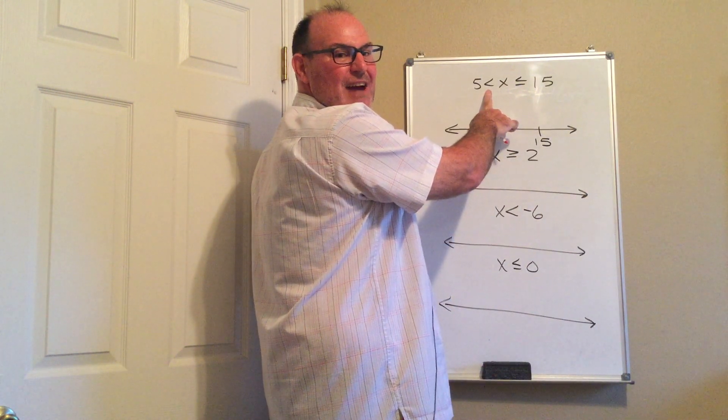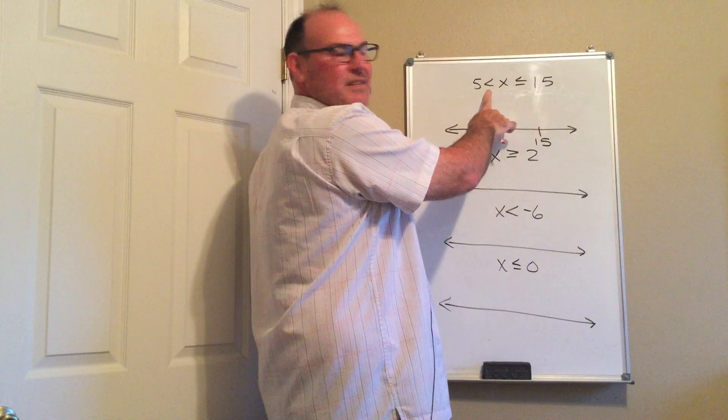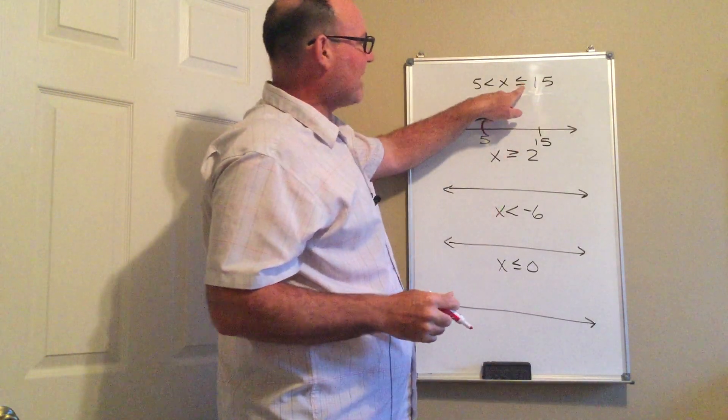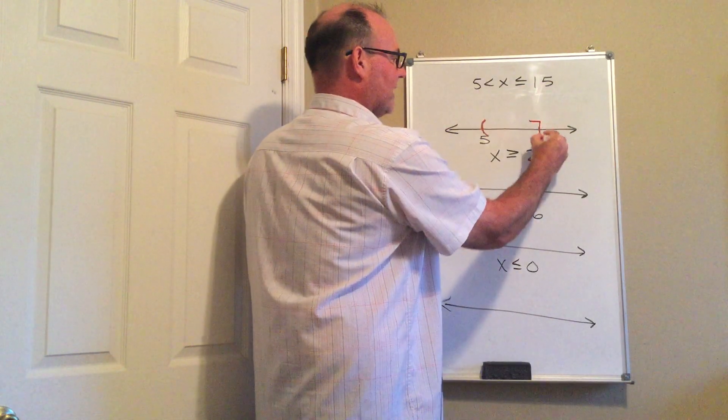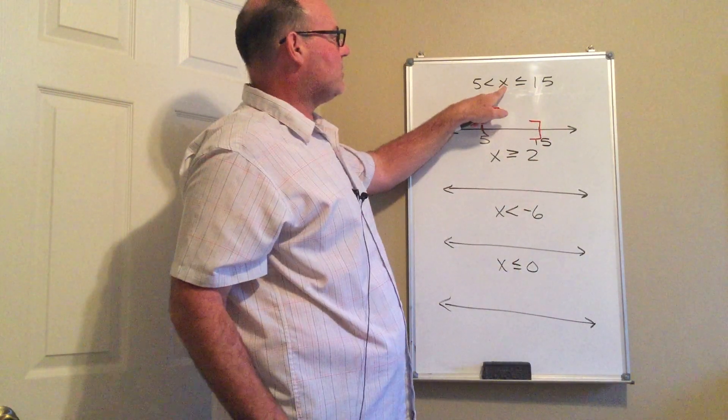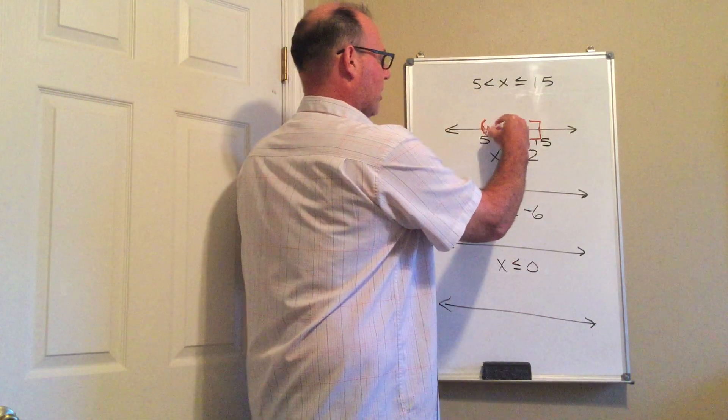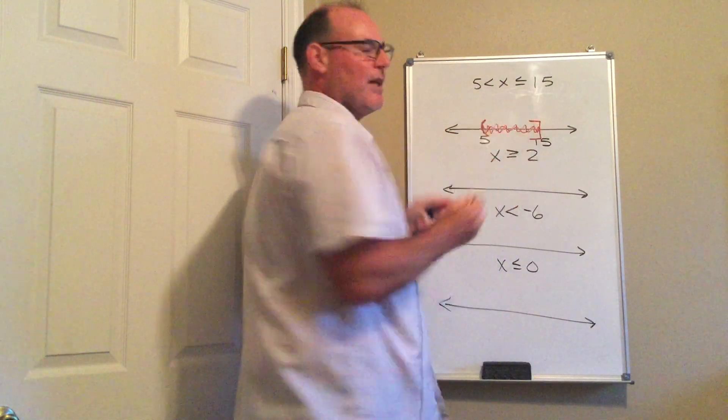For a sign that does not have an equality, we are going to use a parenthesis. So I'm going to put a parenthesis on this side of the interval. On this side, when we do have equals, we are going to use a bracket, and all the values that are greater than 5 and less than or equal to 15 are from here to here.